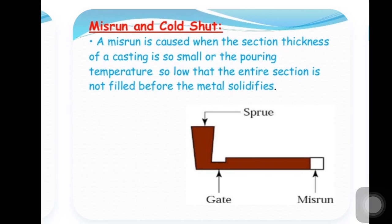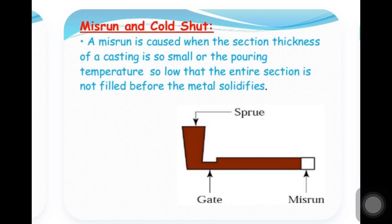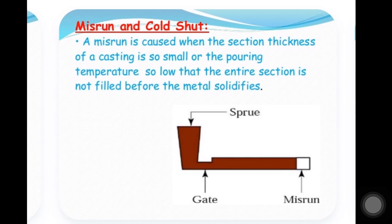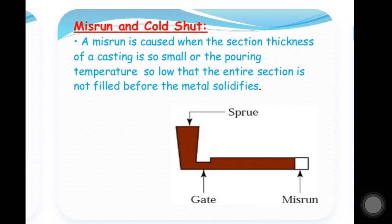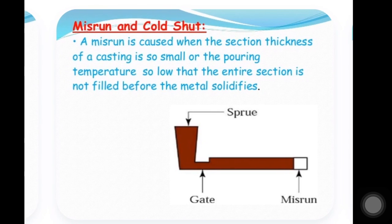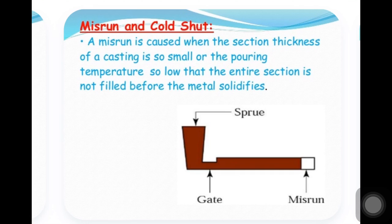A misrun occurs when — as the liquid metal enters through the sprue and gate into the mold — if you have not poured a sufficient quantity of liquid metal, the last portion will remain empty and the liquid metal will not have filled that area completely. A misrun is caused when the casting's section thickness is very thin and the pouring temperature is low, so the entire section is not filled before the metal solidifies.